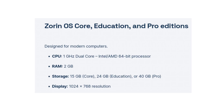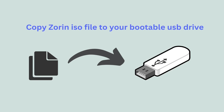The system requirements for Zorin OS Core edition are at least a 1 GHz dual-core processor, either AMD or Intel, that is 64-bit, at least 2 GB of RAM, and at least 15 GB of disk storage. The Core edition requires a screen resolution of 1024 by 768. To install Zorin OS, copy the ISO file to a bootable USB drive.